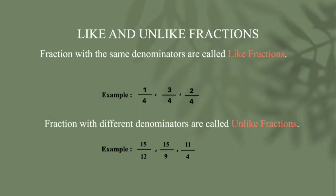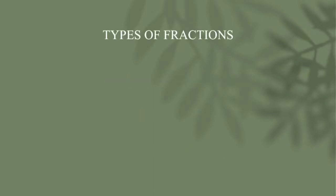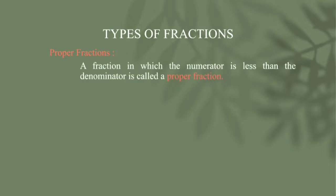Next, we can see the types of fractions. The first one is proper fraction. A fraction in which the numerator is less than the denominator is called a proper fraction. For example, 2 is less than 8, so we can denote it as 2 by 8.